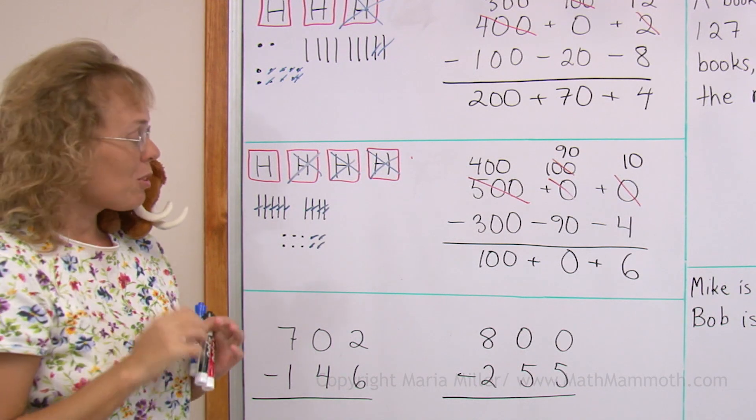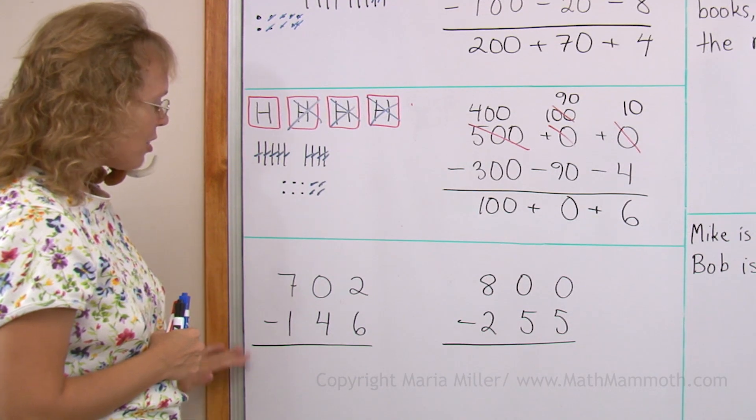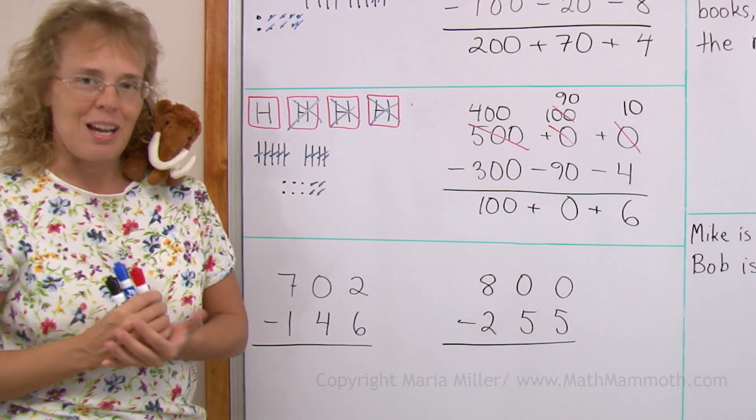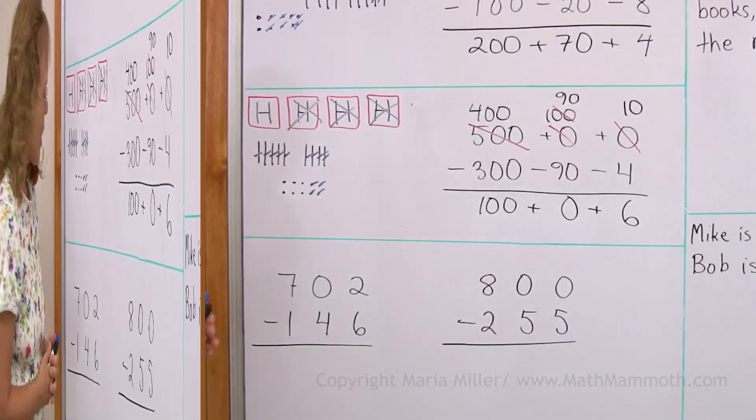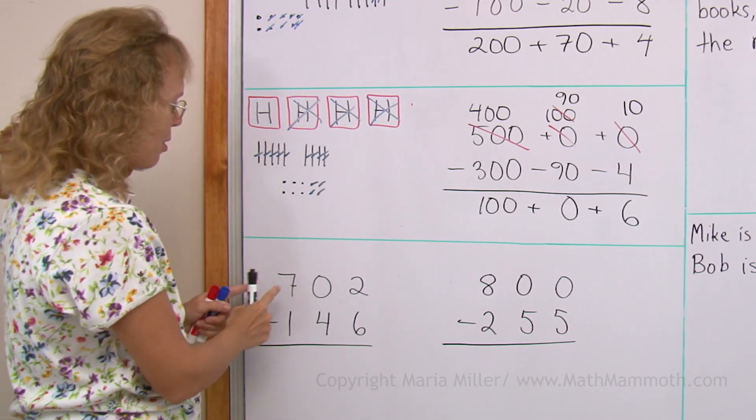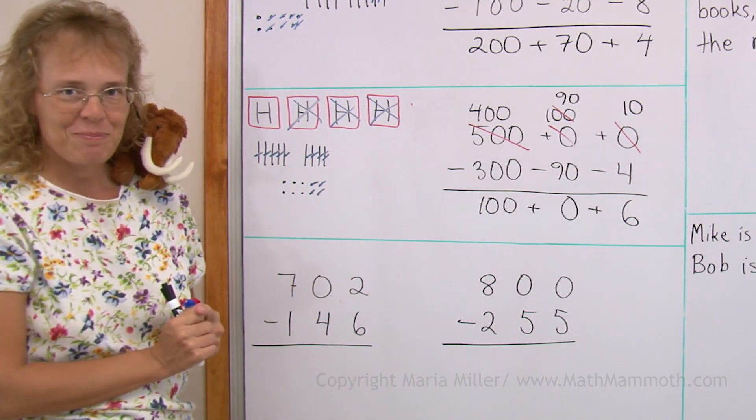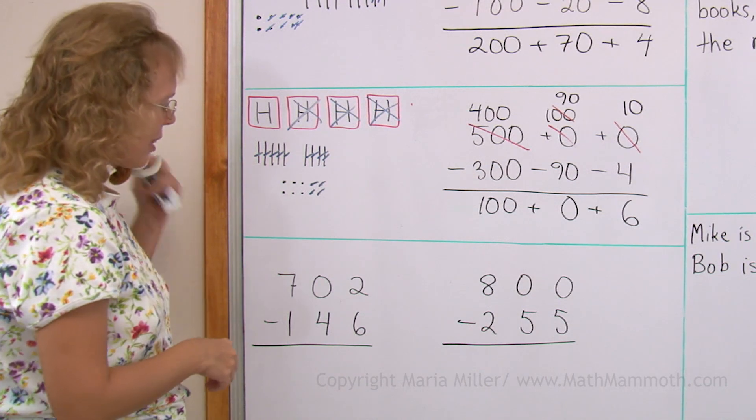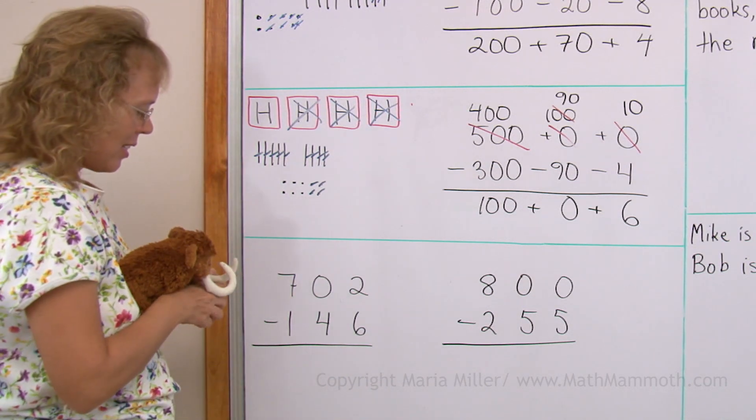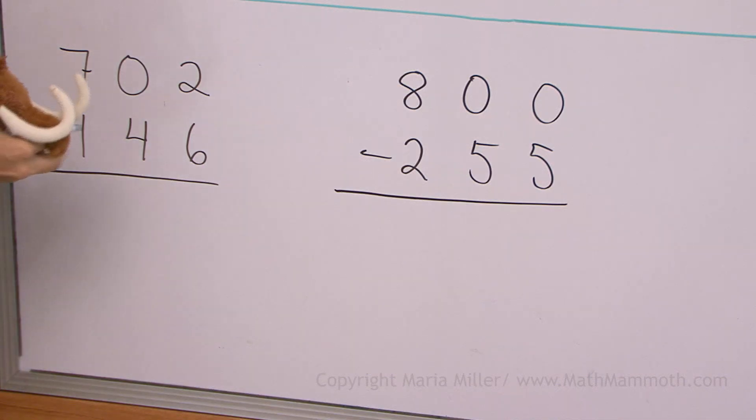But now I am going to show you how we usually do it, when we have the numbers written under each other and what happens with the regrouping. We basically need to regroup twice. We start with the hundreds, one hundred into the tens and then one of those tens into the ones. We cannot subtract 2 minus 6 is our starting point and there are no tens, zero tens.